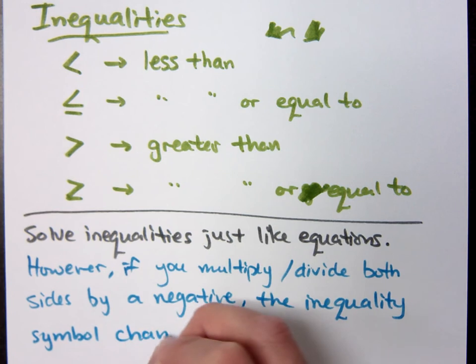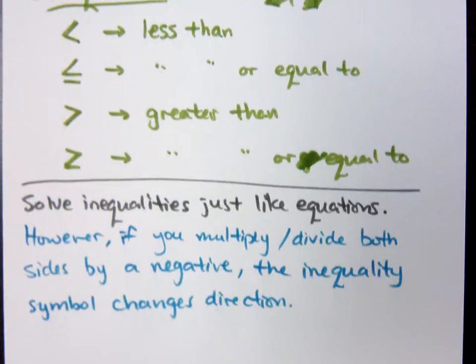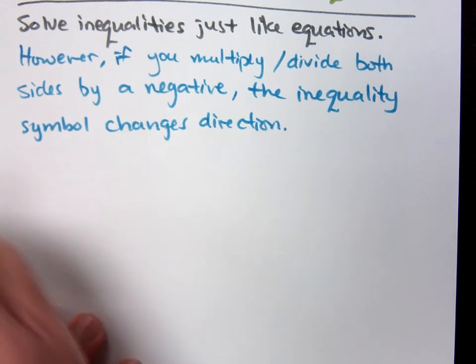The inequality symbol changes direction. If you multiply or divide both sides by a negative, the inequality symbol changes direction. So we're going to see how that comes into play here in just a moment.